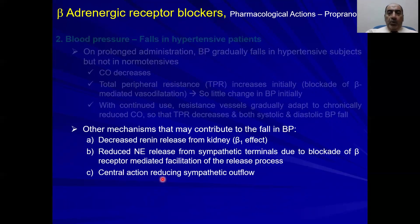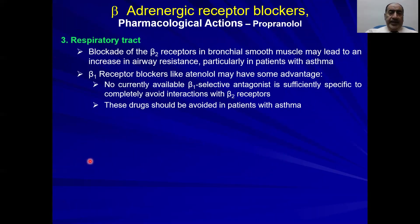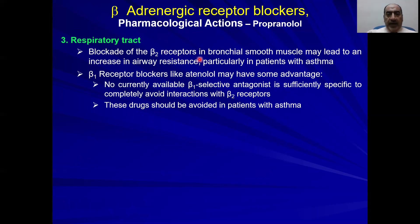Central actions of beta blockers include reducing sympathetic outflow, which normally increases heart rate and cardiac output. On the respiratory tract, the bronchi have beta-2 receptors, and the normal sympathetic response is bronchodilation. If you inhibit beta-2 with beta blockers, this causes bronchoconstriction — that is why these drugs are contraindicated specifically in patients with COPD or asthma.